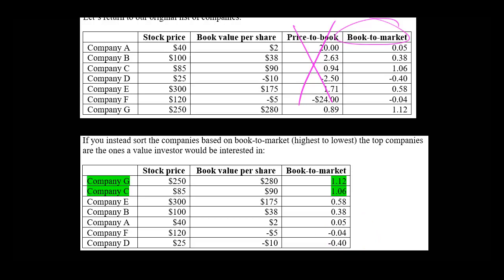And so now we see here are the two companies with the highest book-to-market ratio. Remember, if you have a book-to-market ratio higher than one, those companies are seen as a bargain for a value investor. We see here we've got company G and company C — these are at the top of the list, and these are the ones that a value investor would be most interested in.